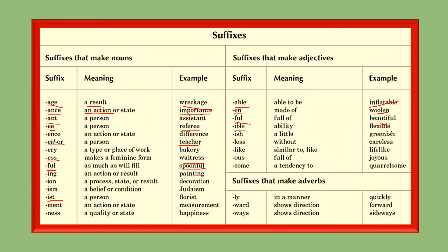Suffixes that make adverbs: the most common suffix for adverbs is '-ly'. When you see a word ending with '-ly', it is mostly an adverb — showing the manner of how things are done, like 'quickly' and 'immediately'. '-ward' shows direction, as in 'forward', 'backward', and 'upward'. '-ways' also shows direction, like 'sideways'. This table is a ready reckoner you can refer to whenever you need to use the correct suffix.